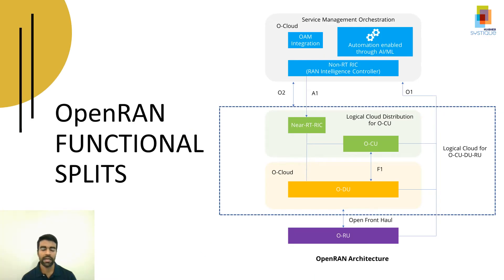In a 5G RAN architecture, the baseband unit is split into two functional units: the distributed unit and the centralized unit. The distributed unit is responsible for real-time L1 and L2 scheduling functions, while the centralized unit is responsible for non-real-time higher L2 and L3 functions. The open RAN concept utilizes vendor-agnostic COTS-based servers for DU and CU software to radio unit.